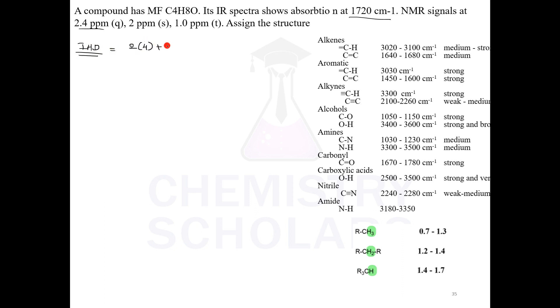2 into 4 plus 2 minus 8. Oxygen is there, so you have to neglect this. 2 fours are 8 minus 8 is 0, plus 2 upon 2 that is 1. IHD is coming out to be 1. That means there are two possibilities: one double bond or one ring.